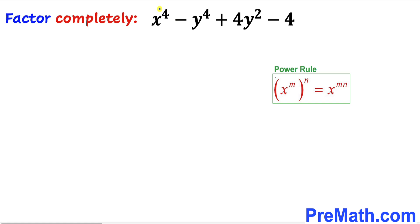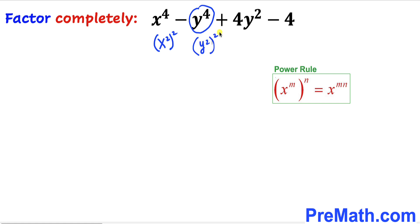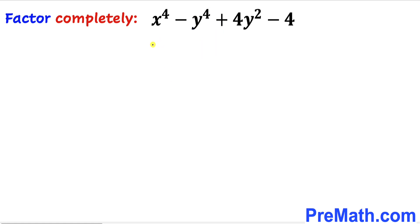We are going to apply this power rule on the two terms x power 4 and y power 4. So x power 4 can be written as (x power 2) power 2, and likewise y power 4 can be written as (y square) power 2. So the whole expression becomes (x power 2) power 2 minus (y power 2) power 2, then plus 4.